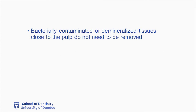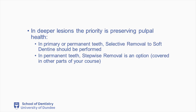Bacterially contaminated or demineralised tissues close to the pulp do not need to be removed. In deeper lesions, the priority is preserving pulpal health. In primary or permanent teeth, selective removal of soft dentine should be performed. In permanent teeth, stepwise removal is an option as well, and this will be covered in other parts of your course.